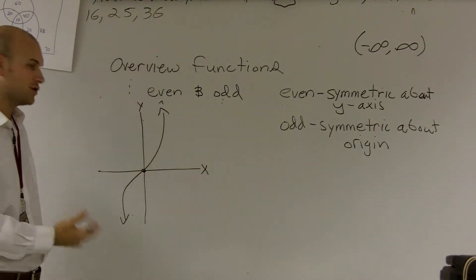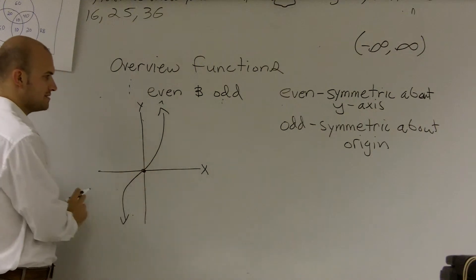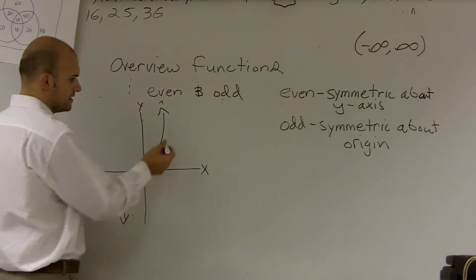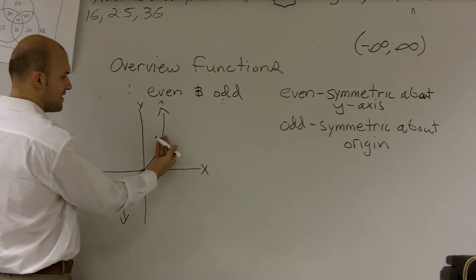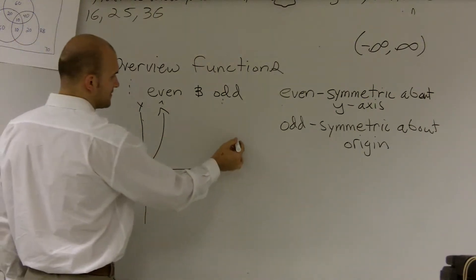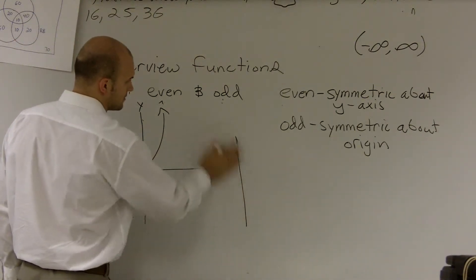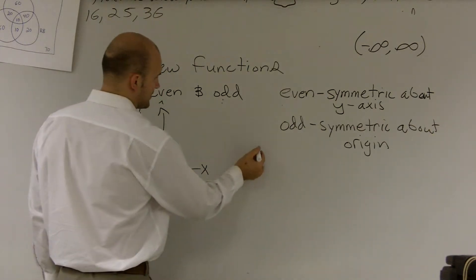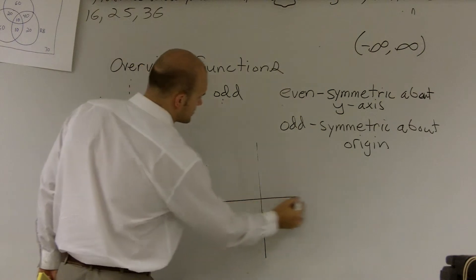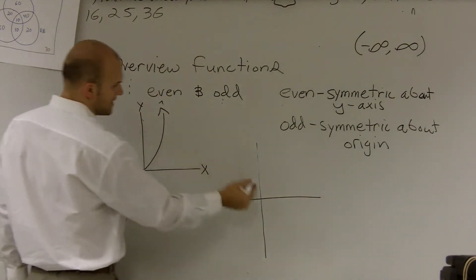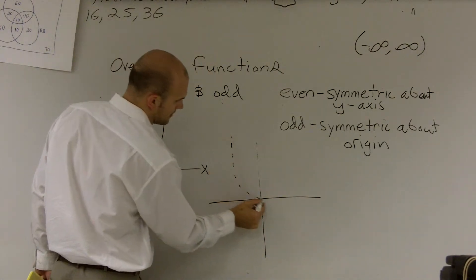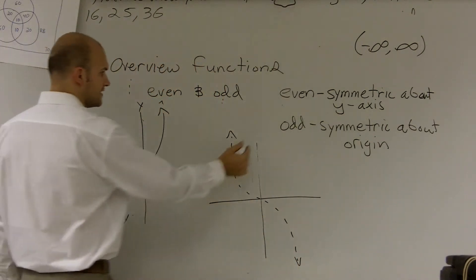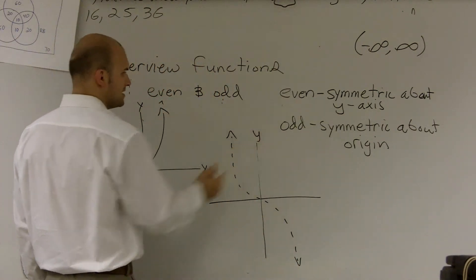It doesn't really matter which way you go. So the first thing I'm going to do is reflect this about the y-axis. If I reflect it about the y, I would get a graph that looks something like this. So if I was to flip this over, I would now have a graph that looks like that. That's reflecting about the y-axis.